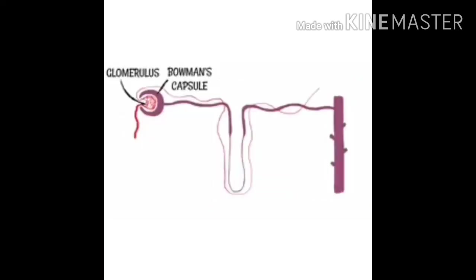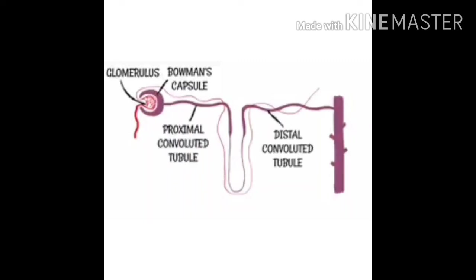This whole process of taking back needed materials is known as selective reabsorption — do not make the common mistake of calling it just absorption. Now let's look at all of the labels for the nephron. You already know the glomerulus and the Bowman's capsule, often known as the renal capsule.